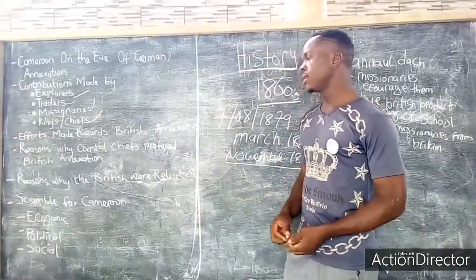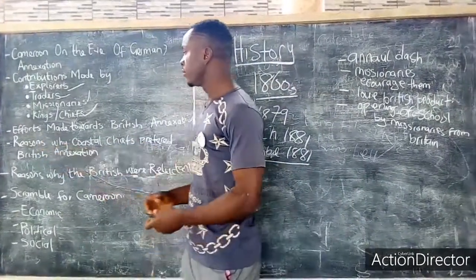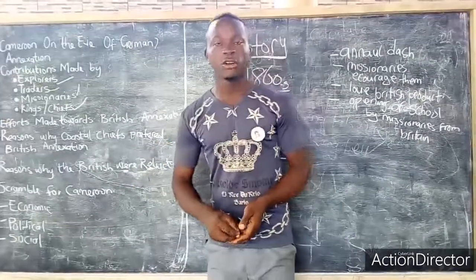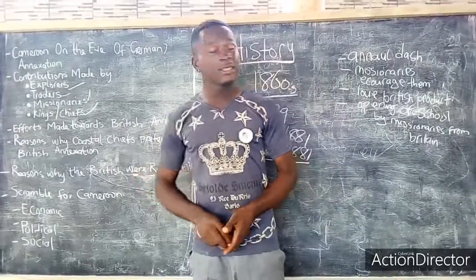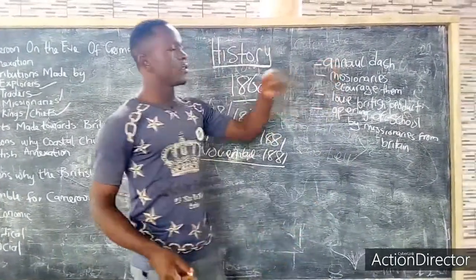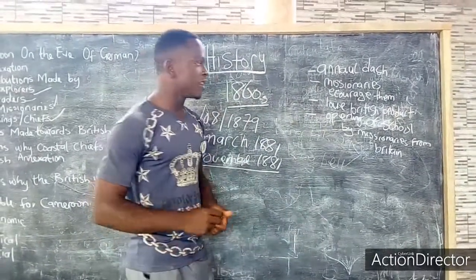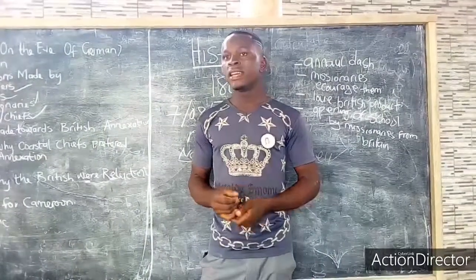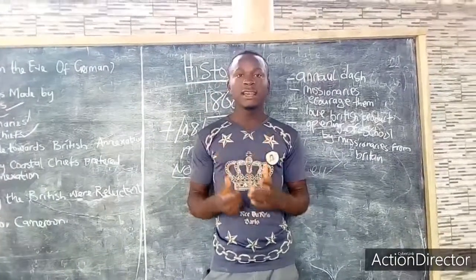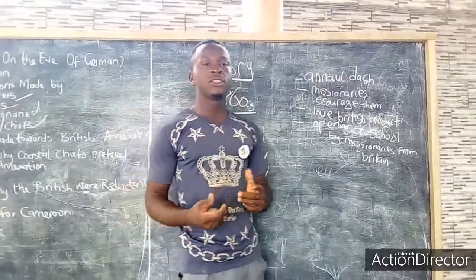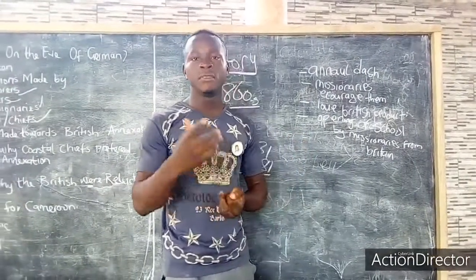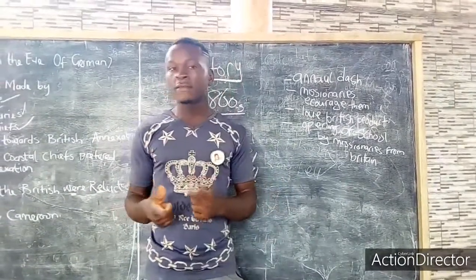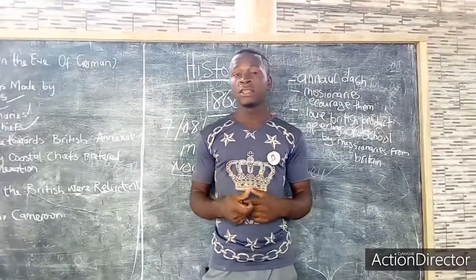We will be talking about why the coastal chiefs preferred the British annexation of the territory. One reason was the annual duties that were given to them by the British traders. These British traders gave them annual duties, and the Cameroon coastal chiefs were very impressed with these duties they received. So for that reason, they preferred that the British come and annex their territory so they could continue to receive these duties.